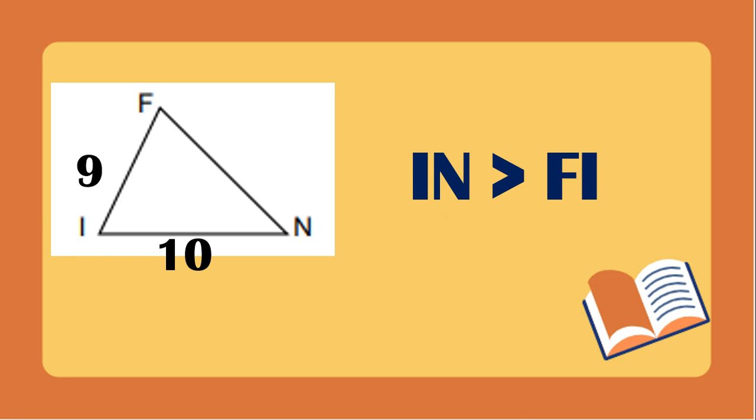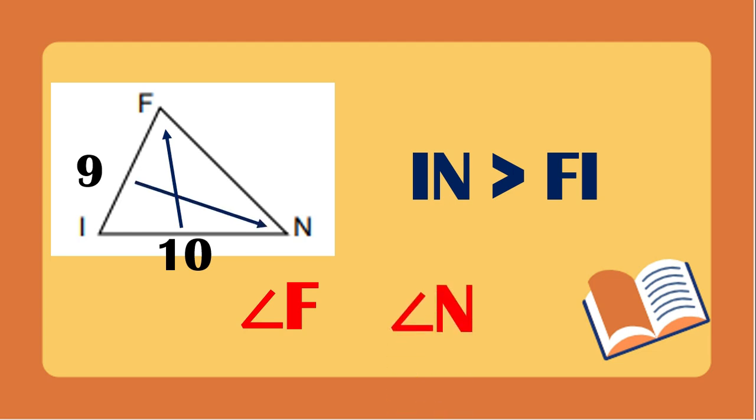It means IN is greater than FI. The opposite angle of side IN is angle F, and the opposite angle of side FI is angle N. If IN is greater than FI, then angle F is also greater than angle N.